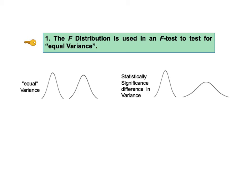F is a test statistic like z, t, and chi-square. F and one of its distributions are used in an F test to test for equal variance. The F test compares samples taken from two different populations or processes. Equal in this context does not mean identical. Equal means that any difference between the two variances is not statistically significant.